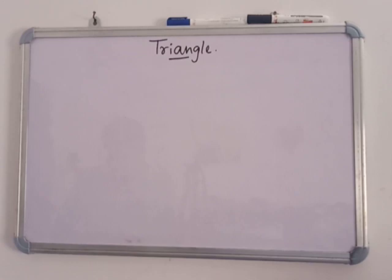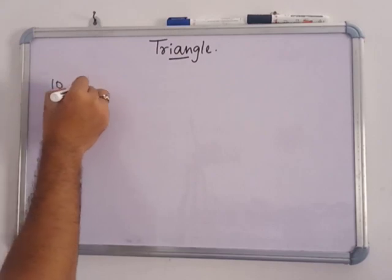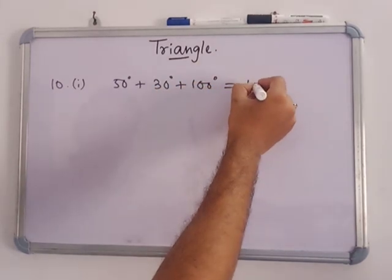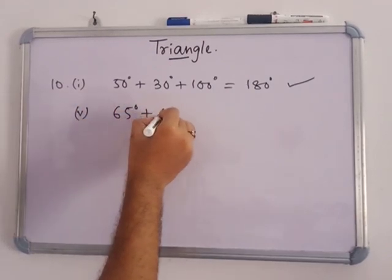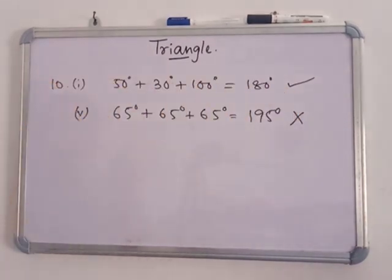In number 10, some angle sets are given and you have to find whether they can possibly be angles of a triangle. Just add them — if you get 180, it is a triangle; if not, it is not. For example, number 1: 50 plus 30 plus 100 equals 180, so it is a triangle. But in number 5: 65 plus 65 plus 65 equals 195 degrees, so it is not a triangle.